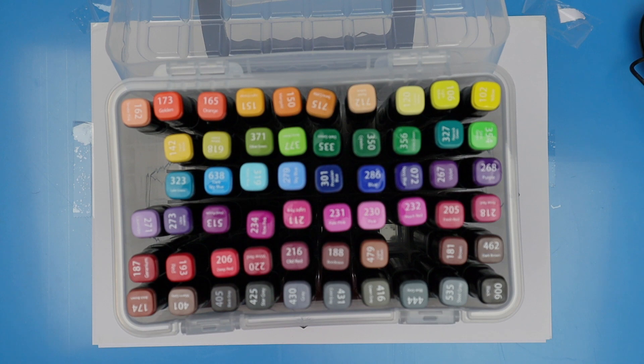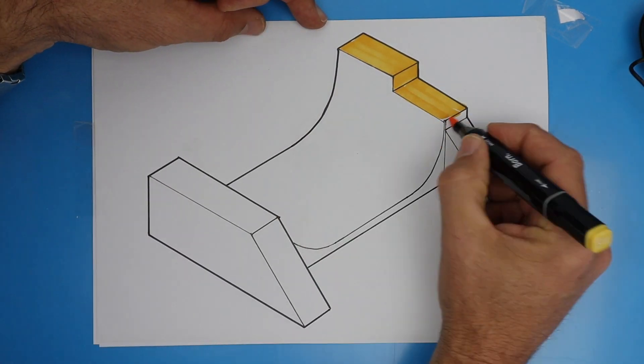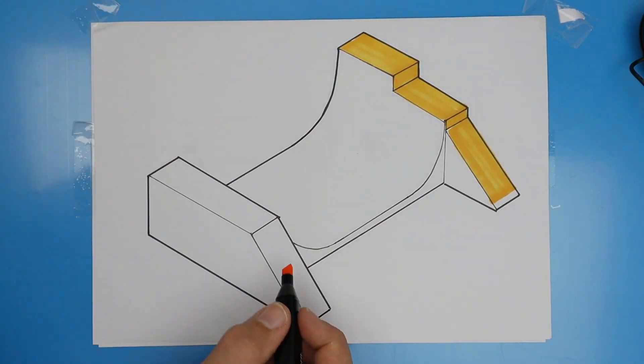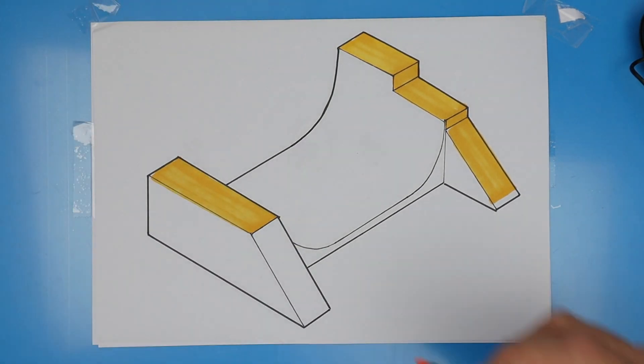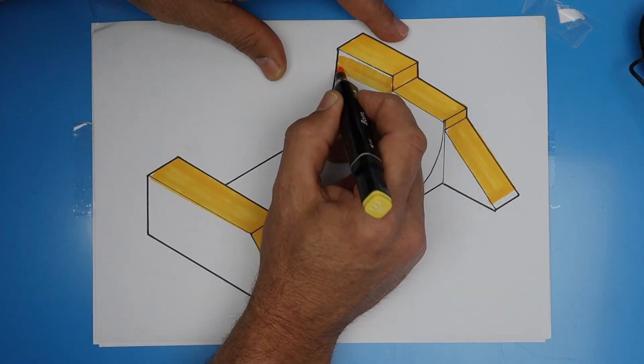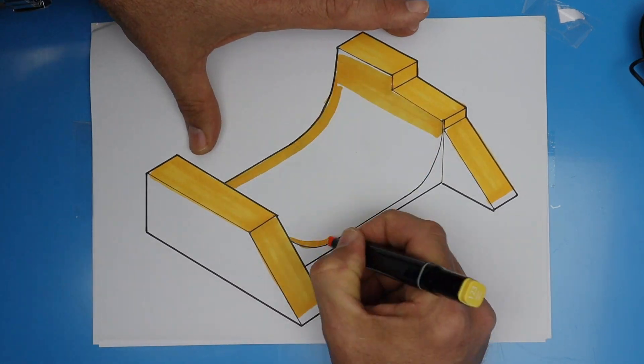I picked up this whole box of art markers for about $30, which is super cheap. Usually, I use pencils on just photocopy paper, but if you're using markers, you're going to need a special paper called a bleed proof paper.